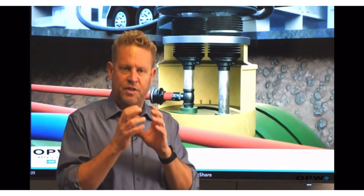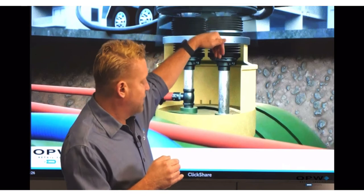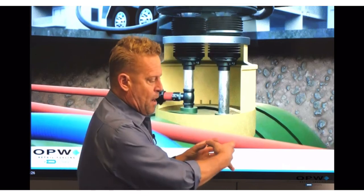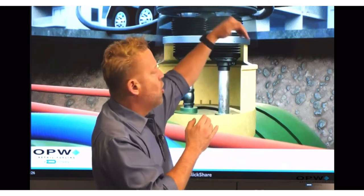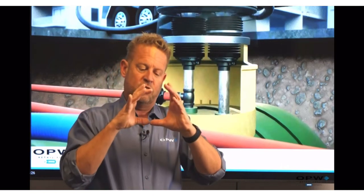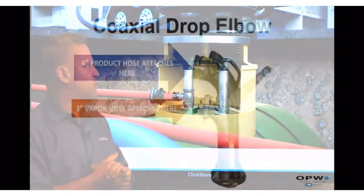On a single point, the fuel drops down the center and the vapors come up on the outside of our riser or drop tube, and then they go back through the hose. Again, the hose has in the center fuel and the outside is vapor, so they collect them through a coaxial drop tube. I actually have a graphic here that shows what that coaxial drop tube looks like. You'll see the two hoses that kind of come up from there.